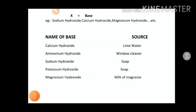Now we have name of some bases and their sources. We see calcium hydroxide is found in lime water, ammonium hydroxide in window cleaner, sodium hydroxide, potassium hydroxide in soap, and magnesium hydroxide in milk of magnesia.